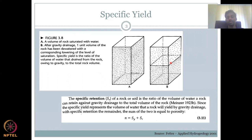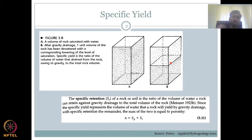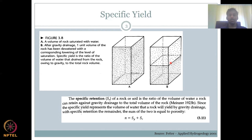Another important parameter is specific retention, or SR, of rock or soil. It is defined as the ratio of the volume of water a rock can retain against gravity — essentially the opposite of specific yield. Specific yield measures how much volume drains out due to gravity over the total volume, whereas specific retention is the water retained in the rock to the total volume of the rock.